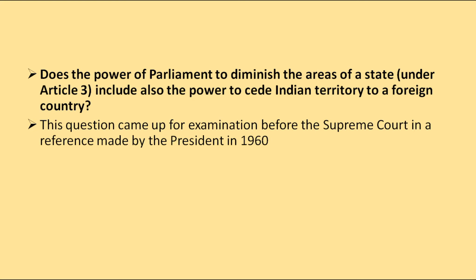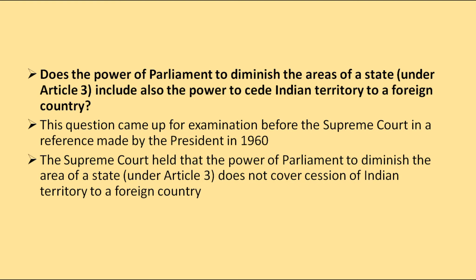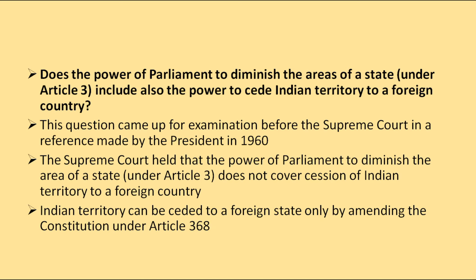This question arose for the first time in 1960 when the Indian government decided to give some part of West Bengal to another country. The Supreme Court held that the power of Parliament to diminish the area of a state under Article 3 does not cover ceding Indian territory to a foreign country. Indian territory can be ceded to a foreign country only by amending the Constitution under Article 368. Consequently, the 9th Constitutional Amendment Act of 1960 was passed, relating to the transfer of Indian territory to Pakistan.